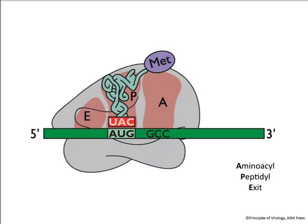By either five prime end-dependent, ribosome shunting, or IRES-mediated initiation, we now have a 60S ribosome at the AUG codon. The met-tRNA is positioned in the P-site — where the peptide bond is actually made. The next amino acid will go into the A-site, depending on the triplet there. Once linked to the first amino acid, the ribosome moves a codon and the used tRNA moves to the exit site.